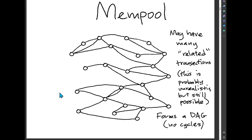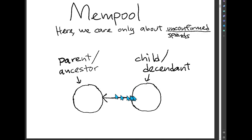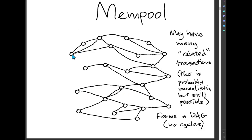In general, in the mempool — or even outside the mempool, in confirmed blocks — transactions can form this graph of spend relationships. Here I show a pretty complicated general graph. It's a DAG, a directed acyclic graph. The arrows are always going to point to the left because the children will be on the right and the parents on the left. So this transaction here is a parent of this one, and this one has a parent to this one. This is like the great-great-great-grandparent of this one and so forth.